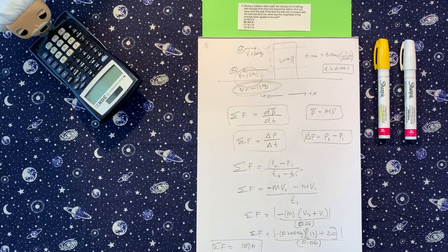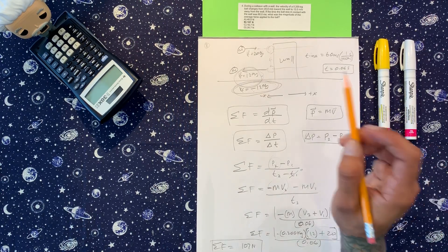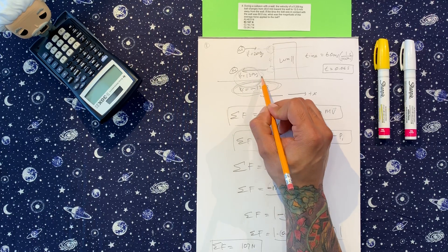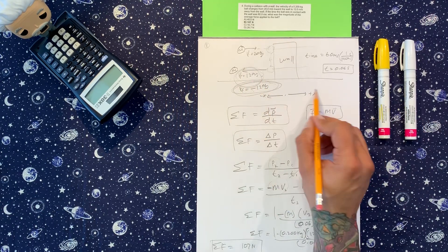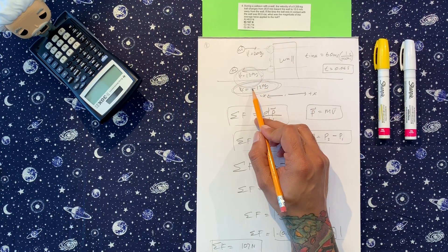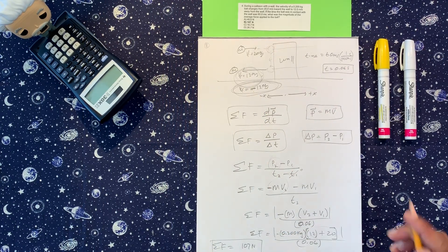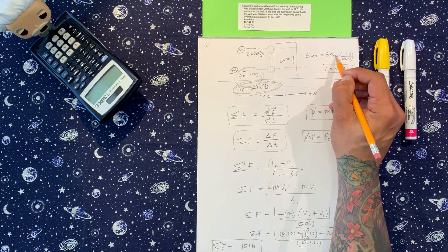All right, so a few things about this one: always know the direction that the final or the initial velocity is facing, because that's going to change the sign. And one little negative sign will completely throw off this problem. Don't let units fool you.